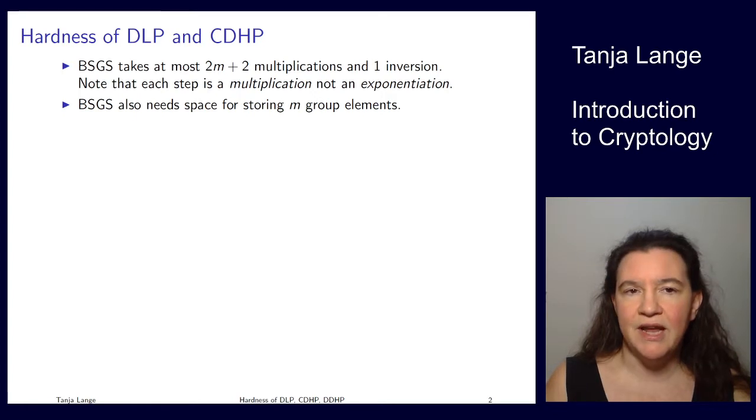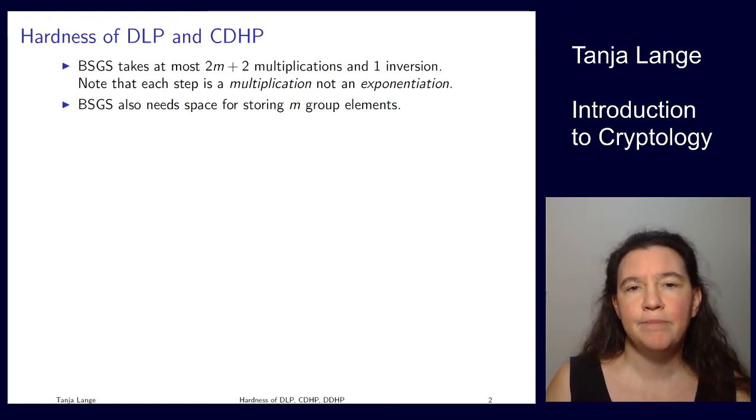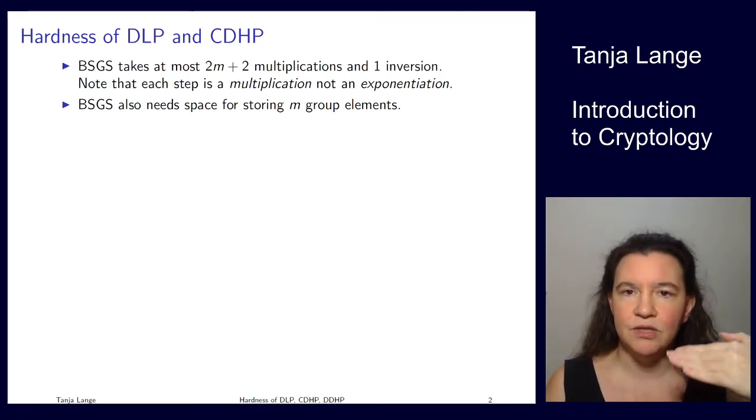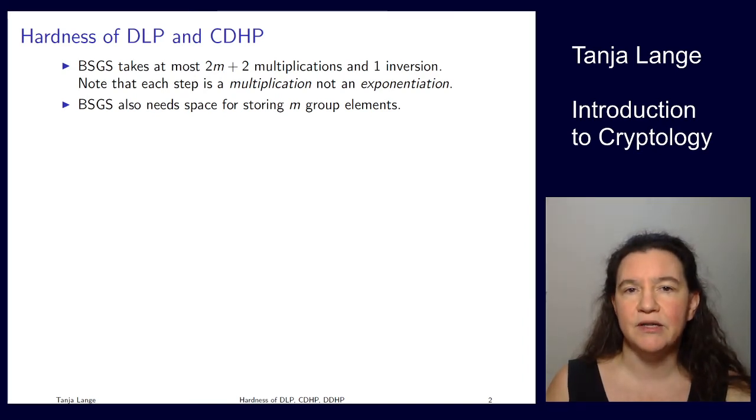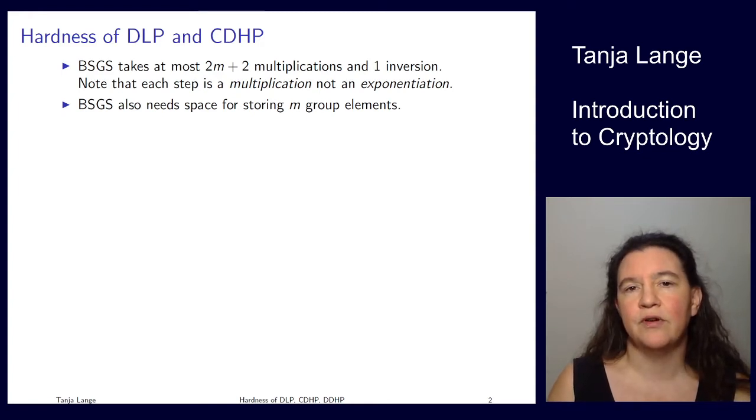We've now seen one attack named the baby step giant step attack in order to compute discrete logarithms. To recap the runtime of this algorithm, there was this parameter m which is chosen about the square root of the group order. Then you need m baby steps, then you have an extra multiplication for the inversion part, and then you have up to m plus one of the giant steps. Each of those steps is just a multiplication, so this looks like an exponentiation because you're writing g to the i and s to the j, but because you know g to the i minus one, getting to g to the i is just a multiplication by g.